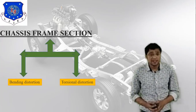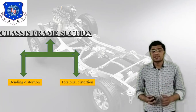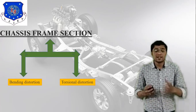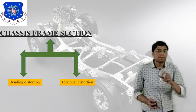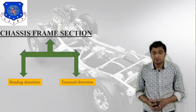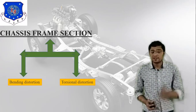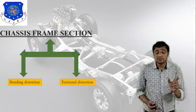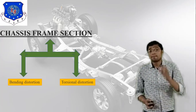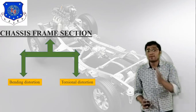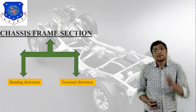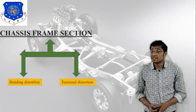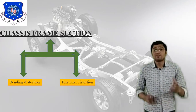Generally in the automobile industry, many sections are used — C section, T section, round section, circular section, rectangular section, and more. The choice depends on two key parameters: bending distortion and torsional distortion. These two parameters are very important for classifying chassis frame sections.